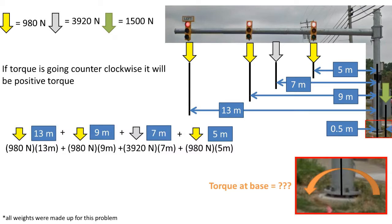So the way we solve this problem is by adding up all the torques. If the torque is going counterclockwise it will be a positive torque. Looking at the diagram, the torque from the stoplights and the beam holding the stoplights is going counterclockwise. So all of these torques will be added together to get the final torque at the base.